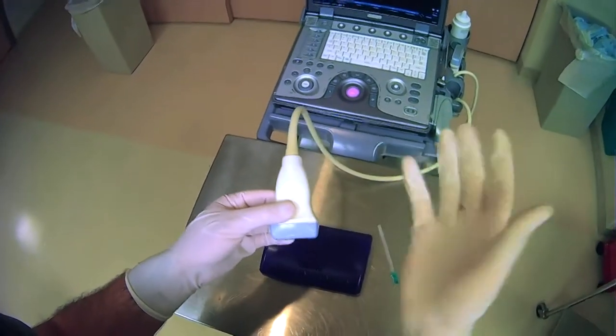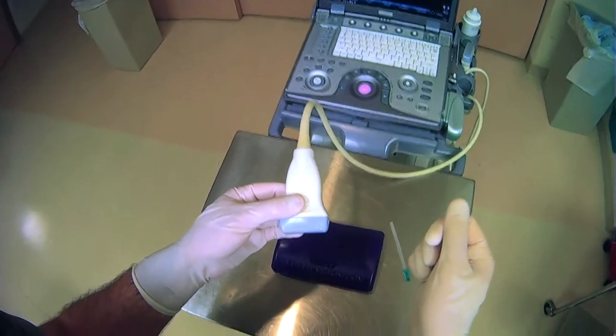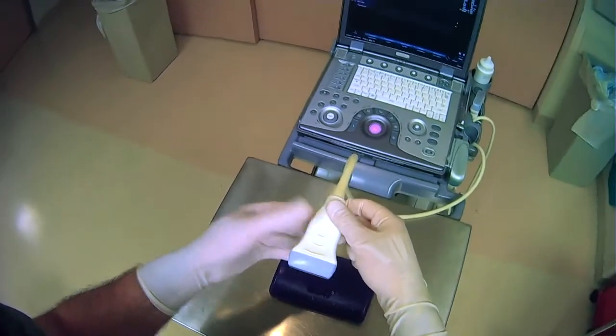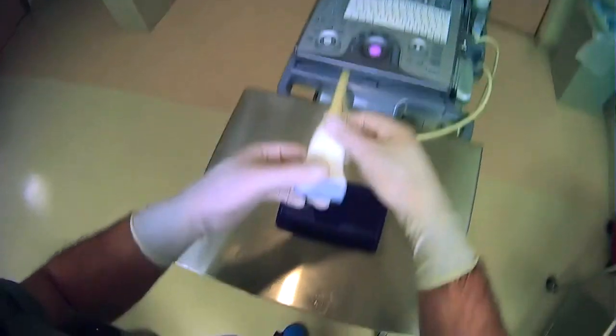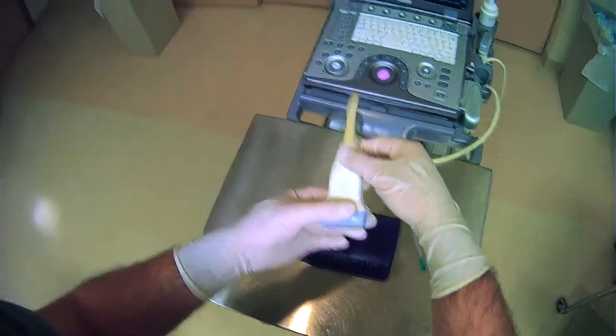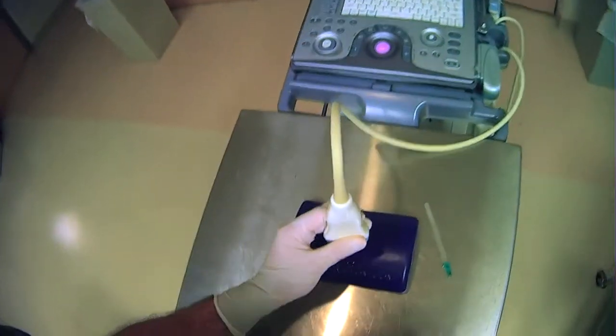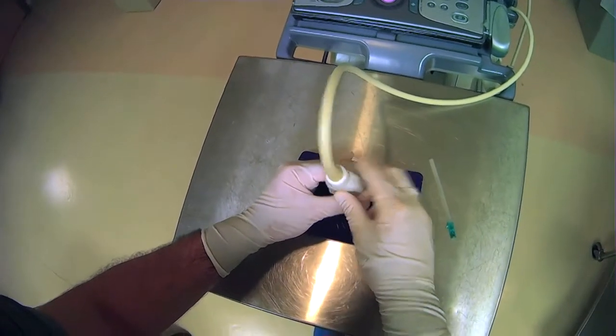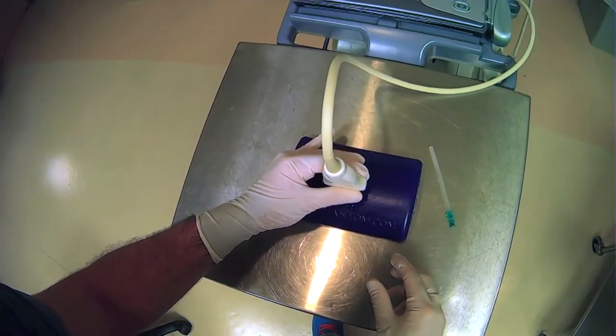So one way to do it is if you're going to be using your right hand for procedural things, grab the ultrasound probe with your left hand and you can put your thumb here and then two fingers on the back here like this. And then as you place the probe down,